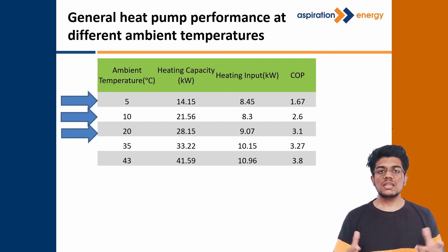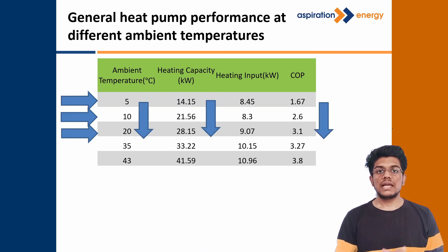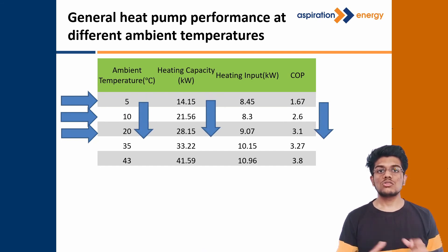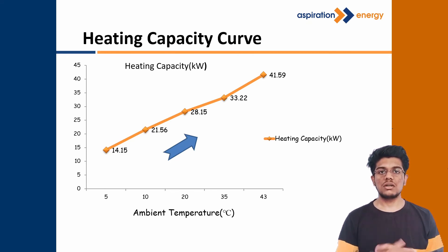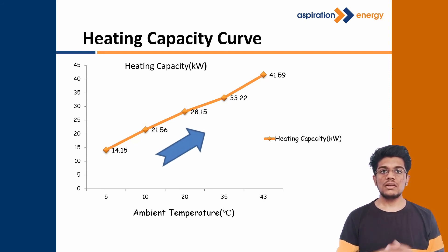From this table, we can conclude that as we increase the ambient temperature, the heating capacity as well as the COP of the system also increases accordingly. If we plot a graph between the ambient temperature and the heating capacity, we get a curve known as the heating capacity curve. As we increase the ambient temperature, the heating capacity of the system also increases accordingly.